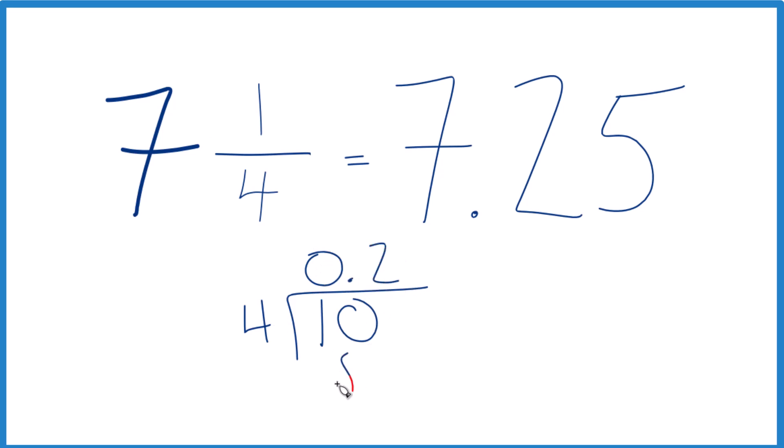2 times 4, that's 8. Subtract, get 2. Let's call it 20, and we'll move over 1. 5 times 4, that's 20. Subtract, no remainder.